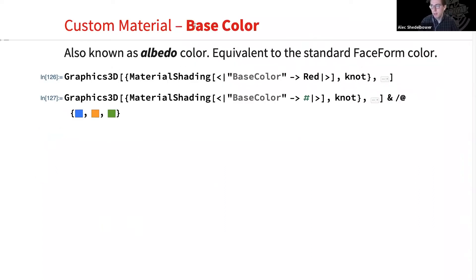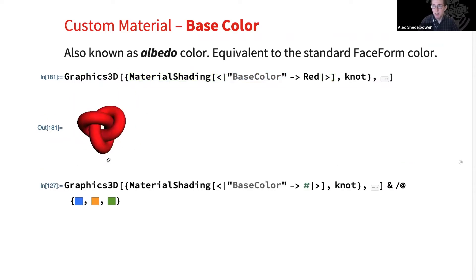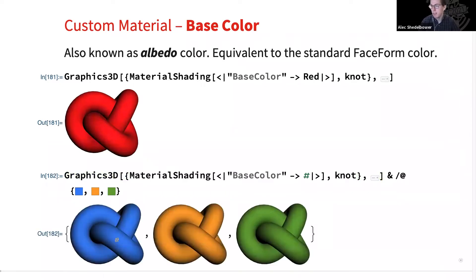So let's go ahead and start adding new parameters. So the first one would probably be the most straightforward is base color. It's also known as the albedo color, and it's equivalent to the kind of standard FaceForm color with the built-in renderer. So we can just set our base color here to red, and that white material is now red. And of course, we can use whatever color we want and see the result.